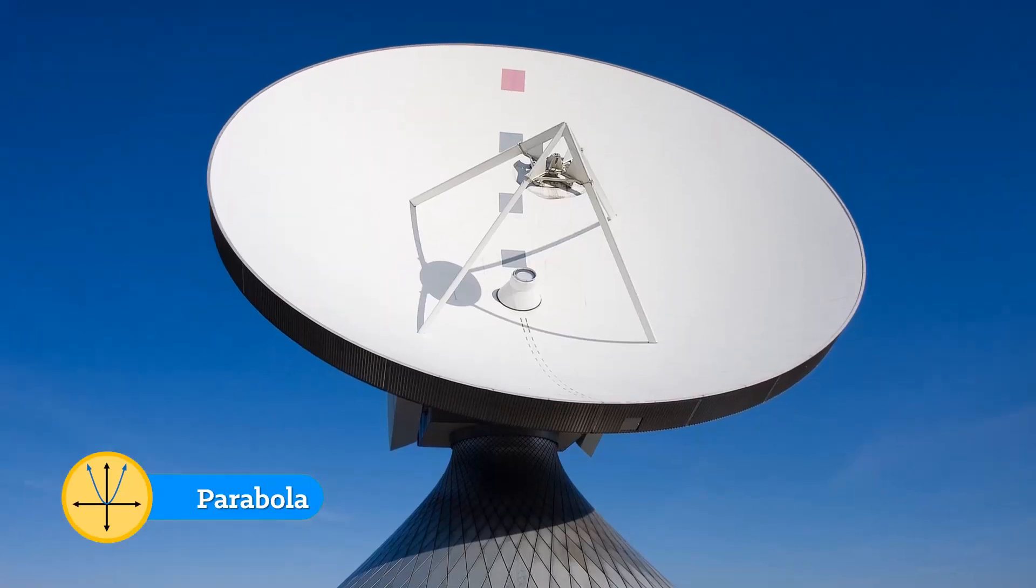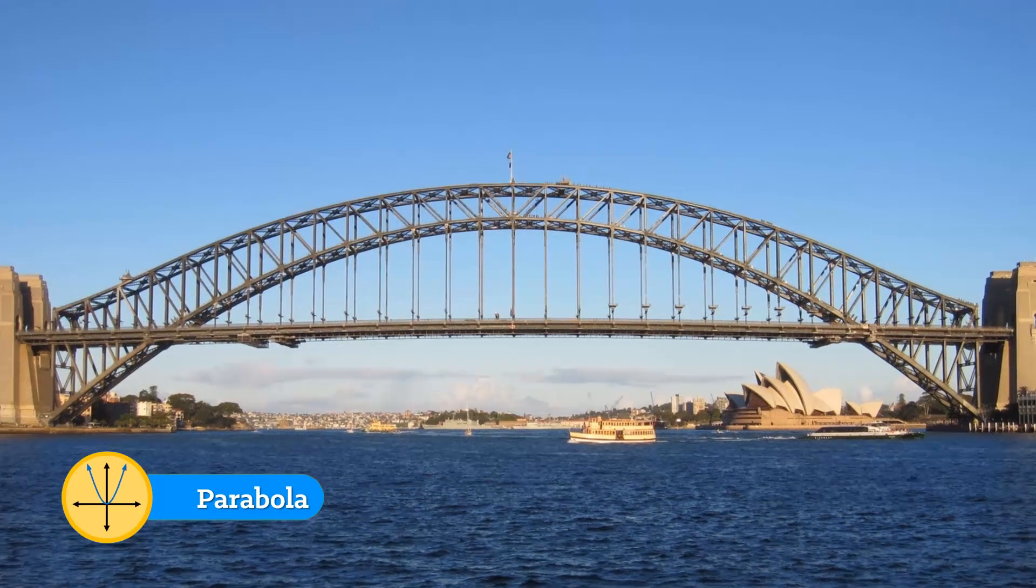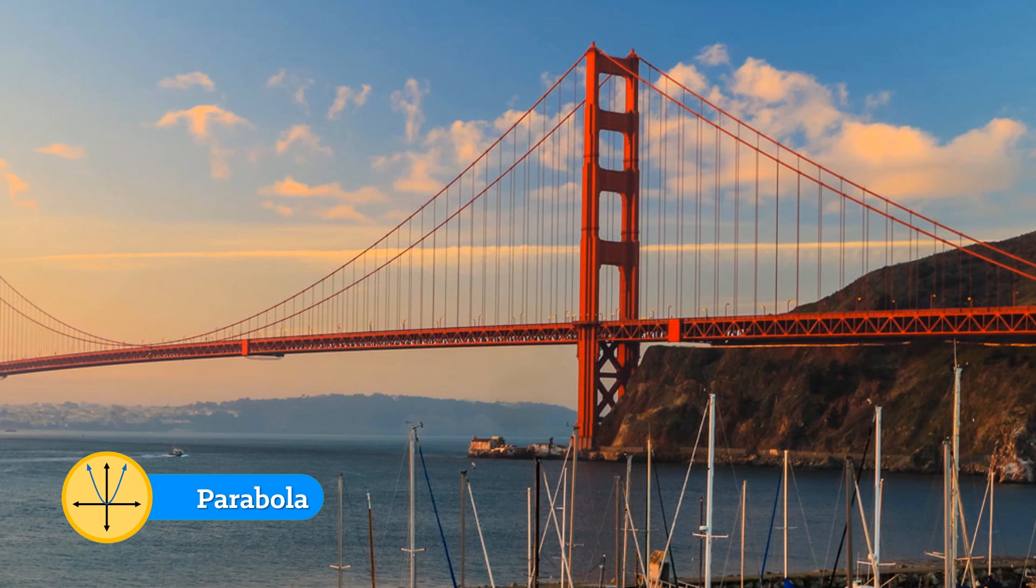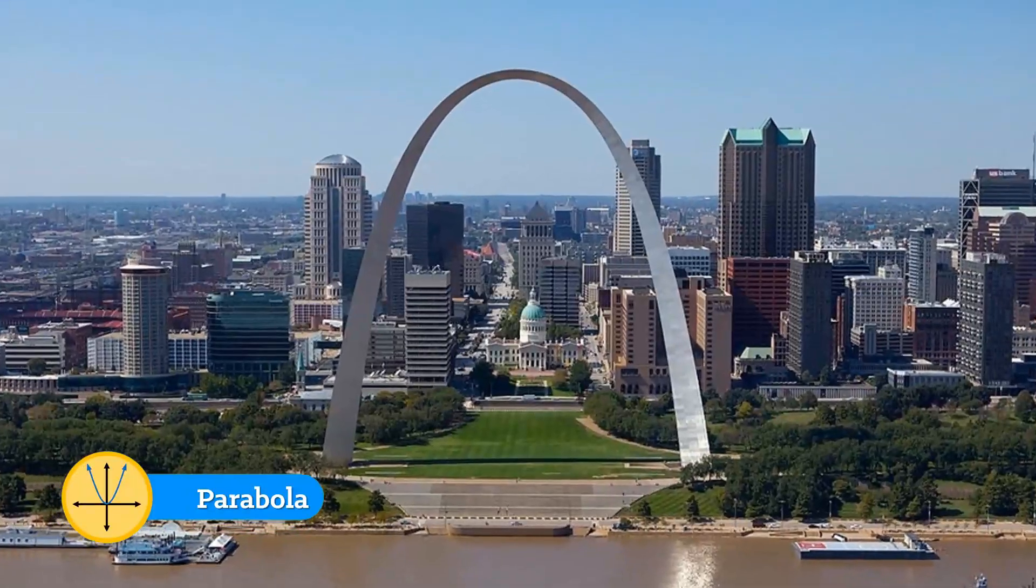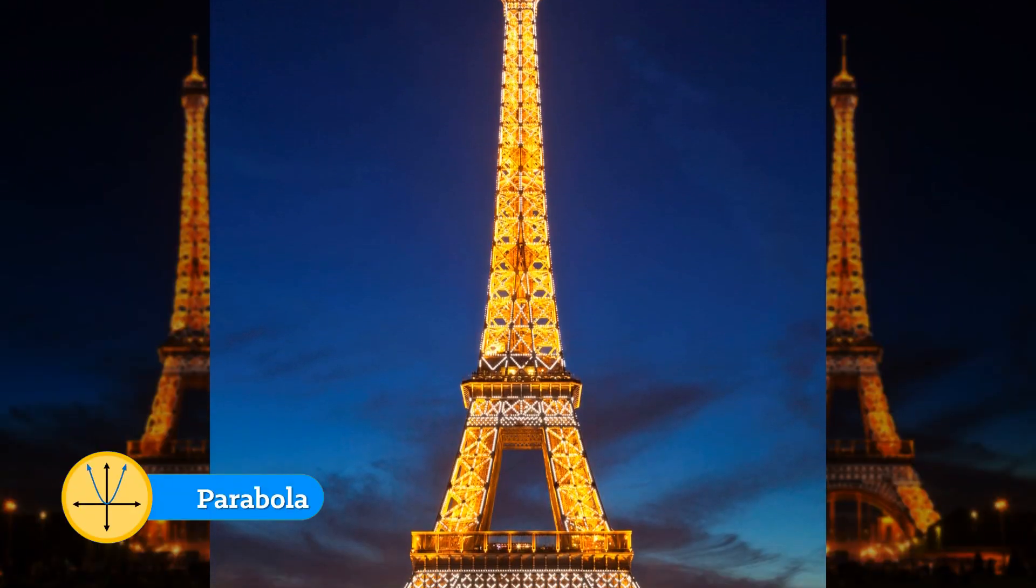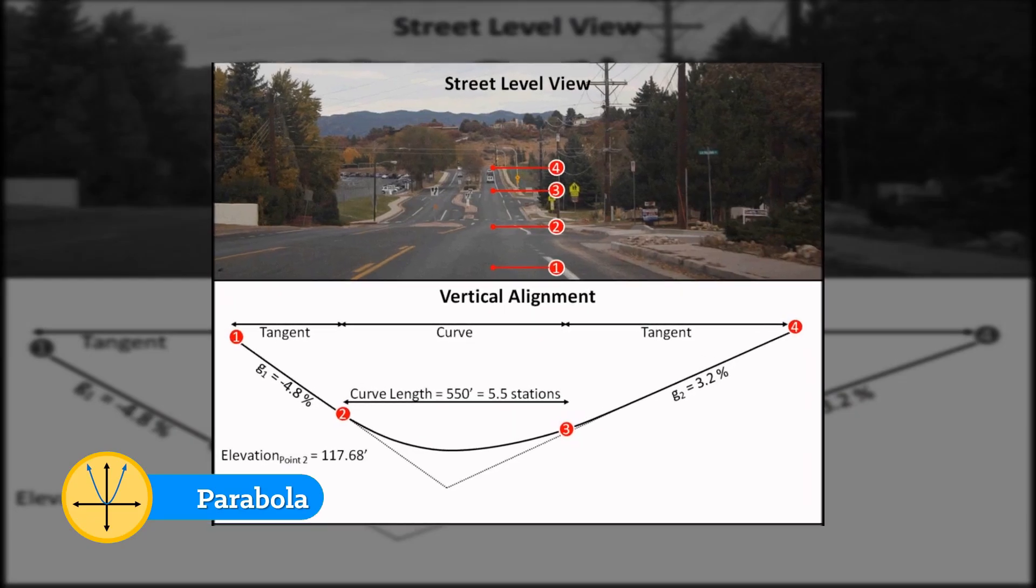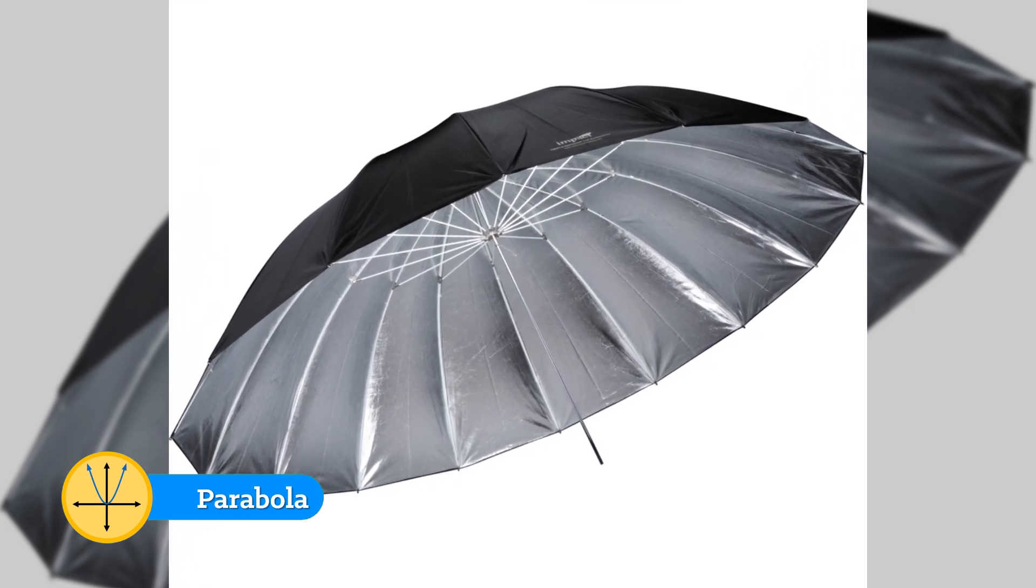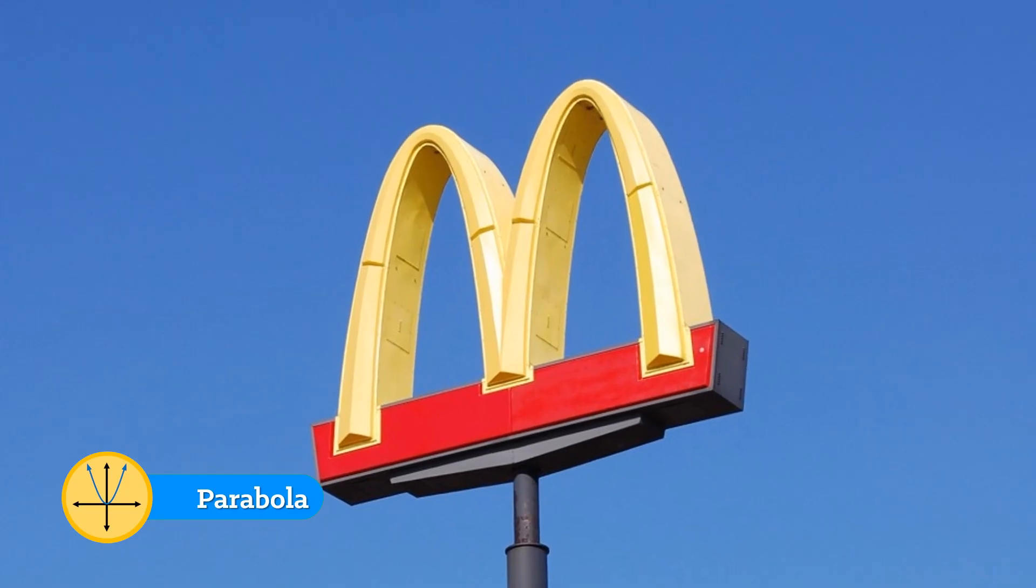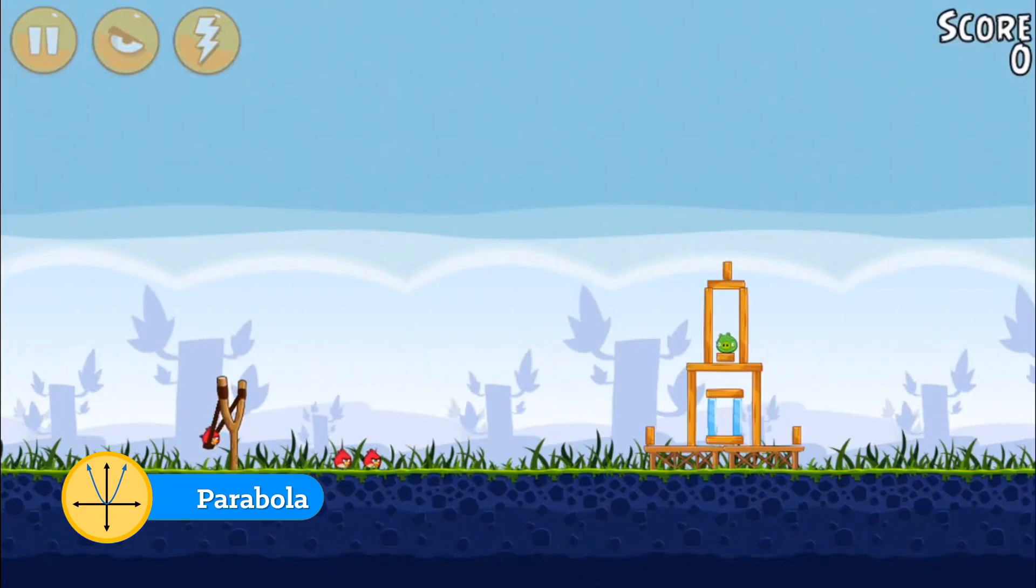Examples include satellites, the Sydney Harbor Bridge, Golden Gate Bridge, Nandu River Grand Bridge, Gateway Arc, Eiffel Tower, roads with vertical curbs, parabolic umbrellas, vehicle headlights, McDonald's Golden Arches, and projectile motion in games like Angry Birds.